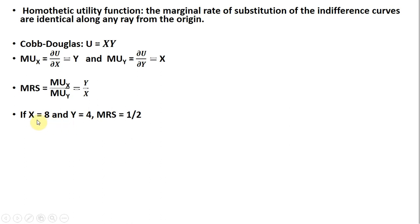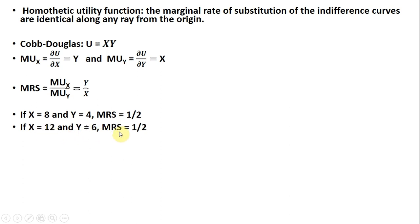Let's increase these initial values of x and y by 50 percent, so x equals 12 and y equals 6, and we see the marginal rate of substitution for this Cobb-Douglas utility function is unchanged. That indicates that we're dealing with a homothetic utility function or homothetic preferences.